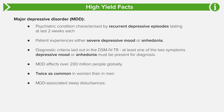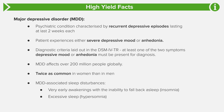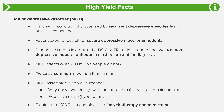Major depressive disorder sleep disturbances typically include very early awakenings with the inability to fall back asleep, insomnia, or excessive sleepiness — hypersomnia. Treatment of major depressive disorder is generally a combination of psychotherapy and medication, but it depends on a case-by-case basis per patient.